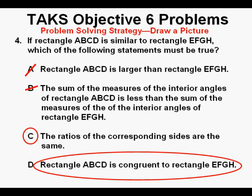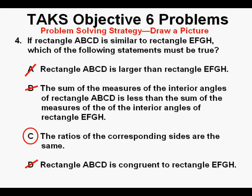And as for answer D, that rectangle ABCD is congruent to rectangle EFGH. That means that they have the same size and shape, which can be true, but since it doesn't have to be true, we cross off answer D as well.